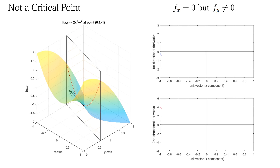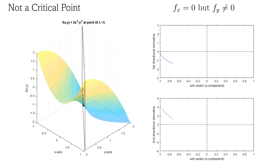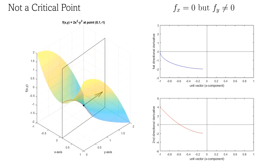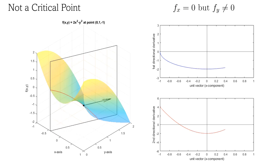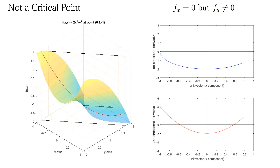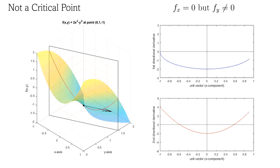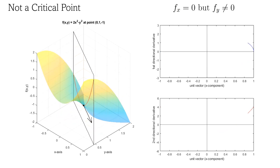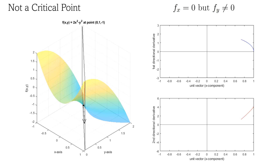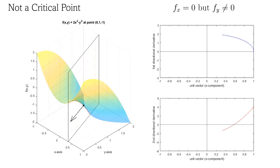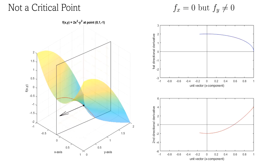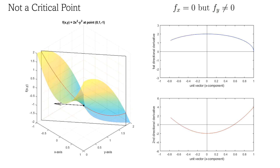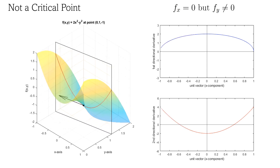For this first example, I have chosen a non-critical point. Notice how the directional derivative isn't always 0. So the second derivative test cannot be applied in this case, as the chosen point is not critical. However, we can still make use of the second directional derivative plot to help us visualize what directions are concave up, concave down, or of 0 concavity.